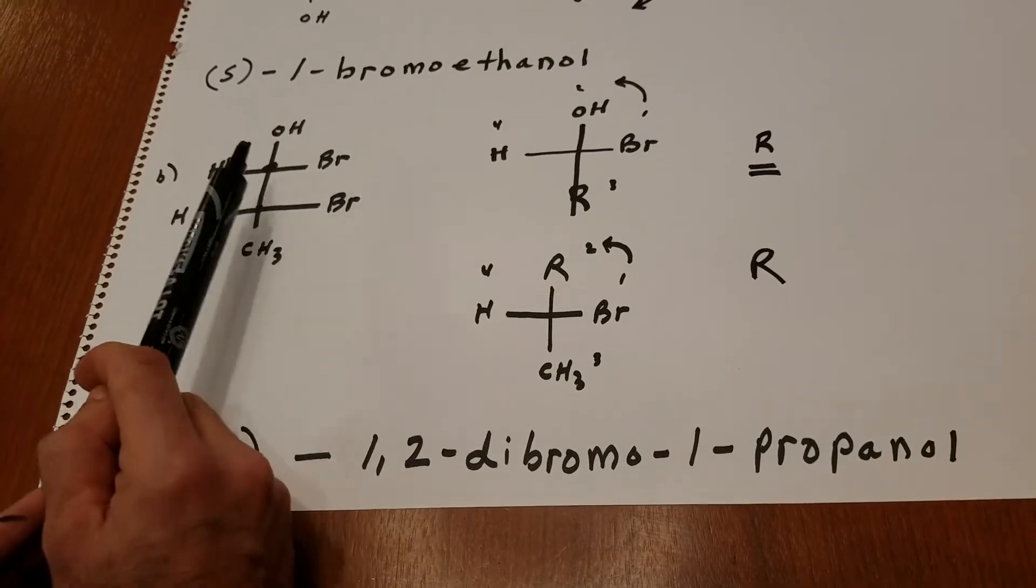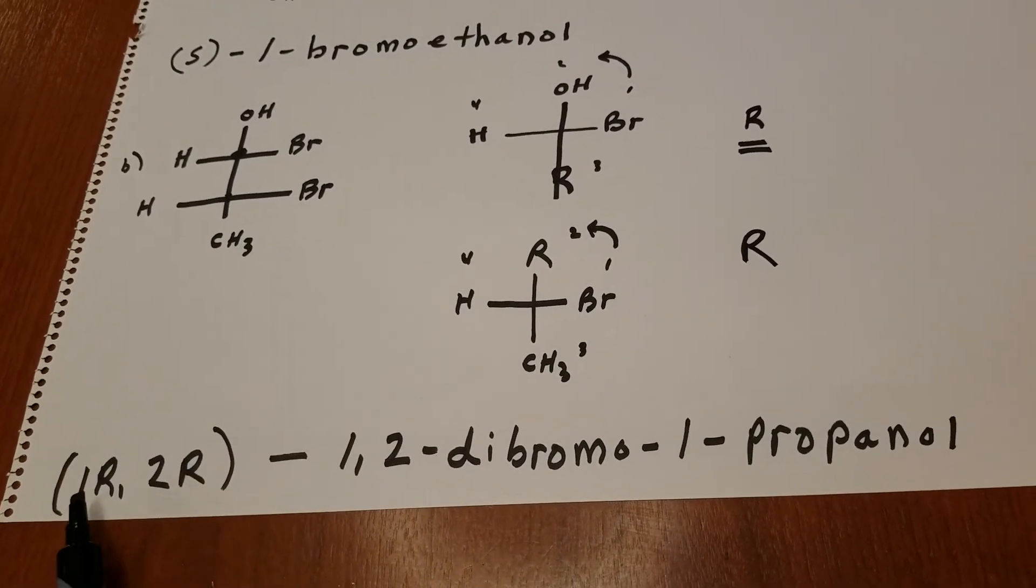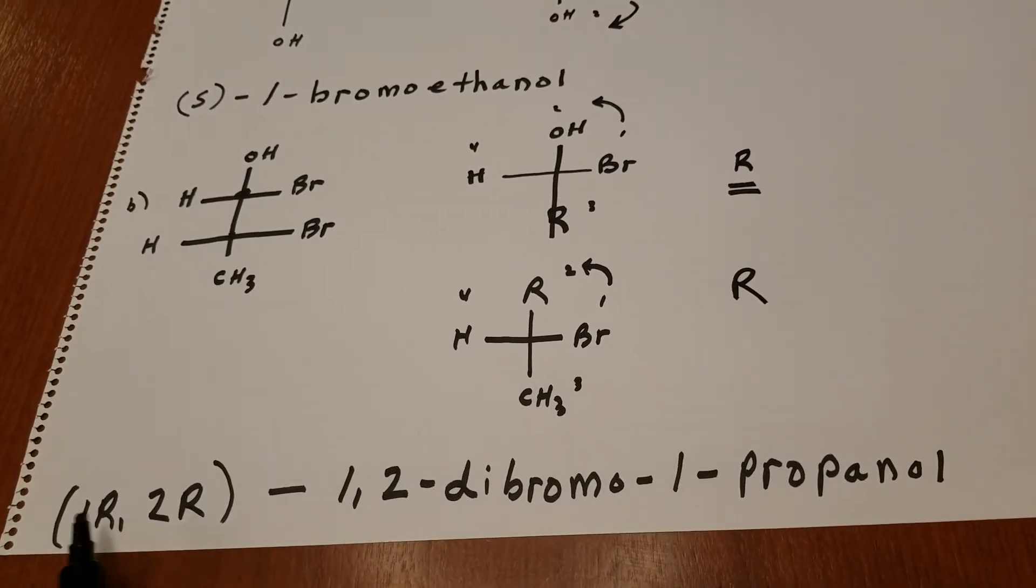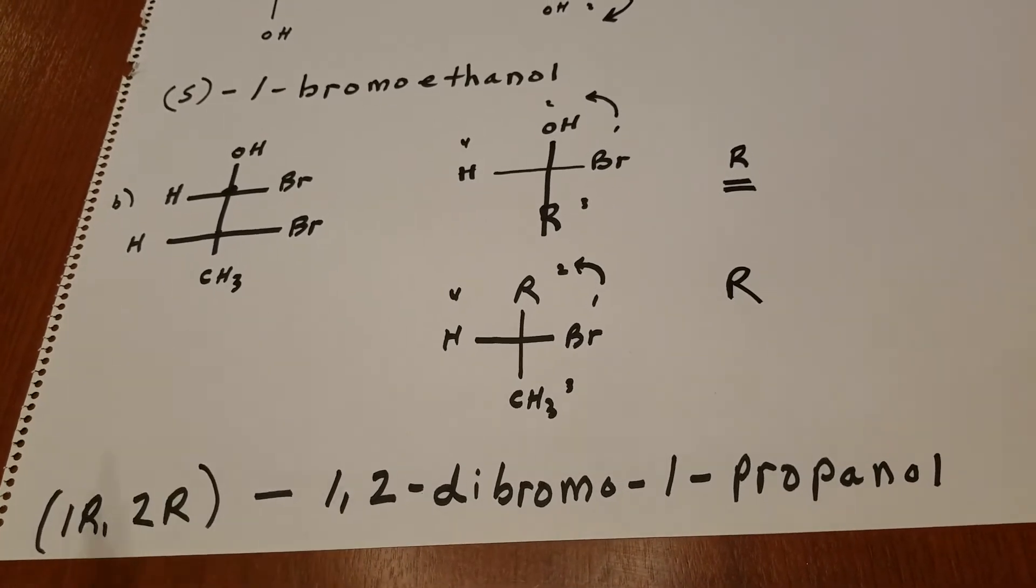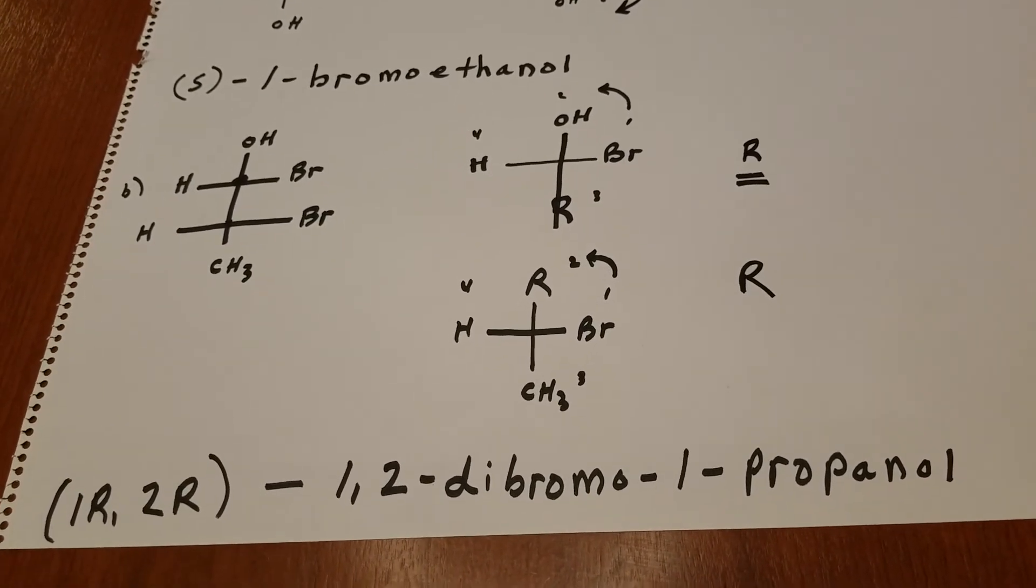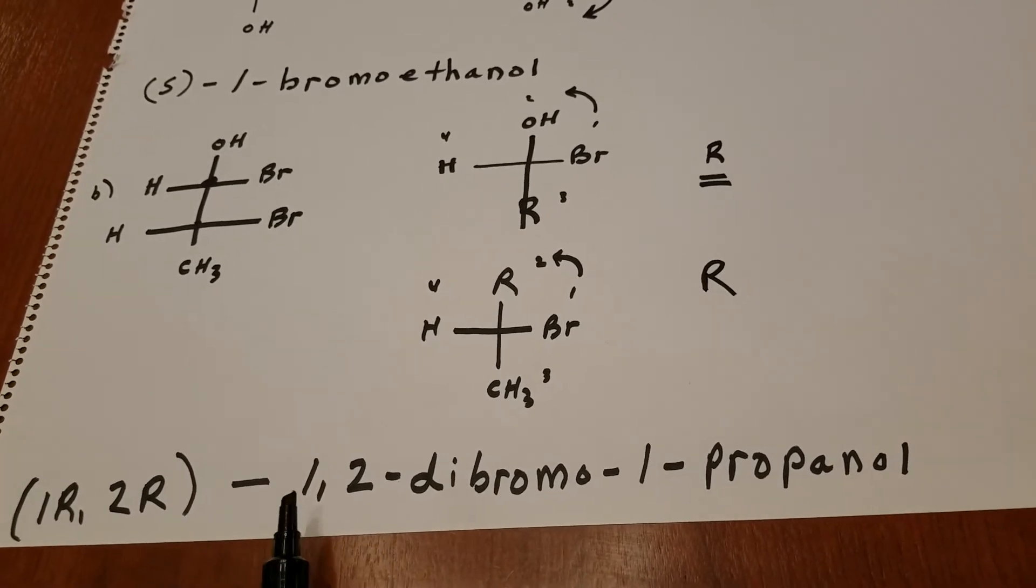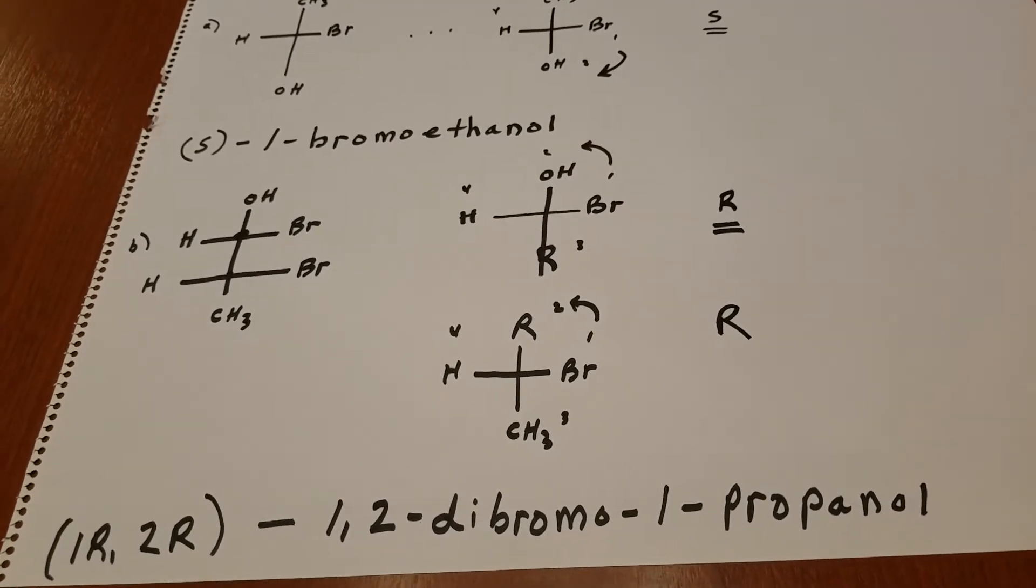Putting it all together now, this being carbon one, this being two, and this being three, I put the stereochemical descriptor. Since there's two chiral carbons, I need to identify a number. I didn't need that in the first example, because there was only one center of chirality. So what we're going to get here is a 1R,2R-1,2-dibromo-1-propanol.